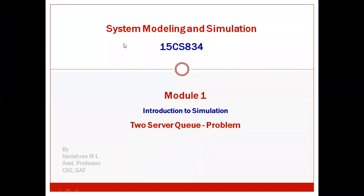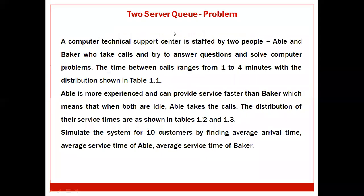Hello students, today in this video we will see a two-server queue problem. It is a very famous popular question known as the Able and Baker problem. The question goes like this: a computer technical support center is staffed by two people, Able and Baker, who take calls and try to answer questions and solve computer problems. The time between calls ranges from one to four minutes with the distribution shown in Table 1.1.